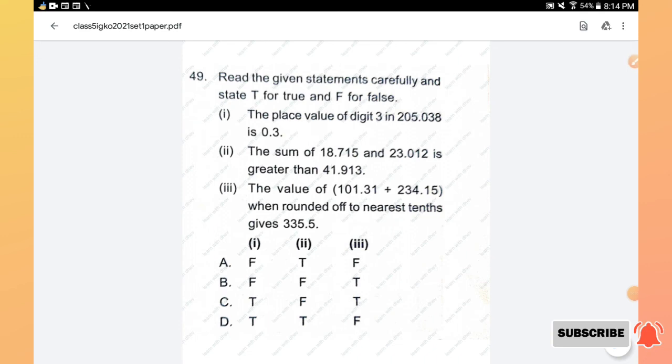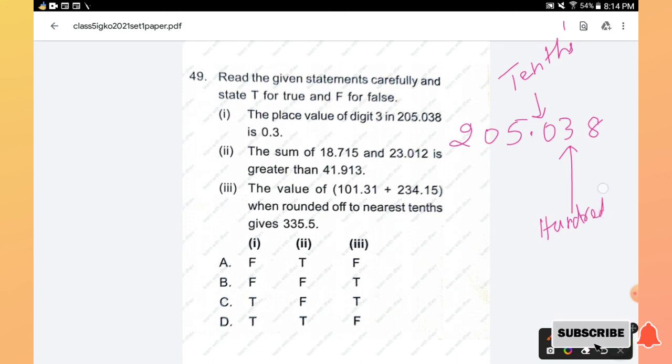Question number 49: Read the given statements carefully and state T for true and F for false. The first statement: the place value of digit 3 in 205.038. First we will write 205.038. So what is the place value of 3 here? This 3 is in the decimal part, so we will tell this as the first 0 is tenths and 3 would be called as hundredths. So how we will write the place value of 3 in decimal? Hundredths can be written as 3 by hundred, so it can be represented as 0.03. Here it is given 0.3, so the statement is false.